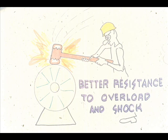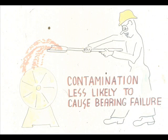Because of their solid construction, sleeve bearings have a much better resistance to unexpected overload and shock conditions. Contamination such as dirt, dust, and other foreign particles are less likely to damage sleeve bearings than precision rolling contact bearings. This is true because the smaller particles will embed themselves in the soft bearing material, resulting in less damage to the bearing.